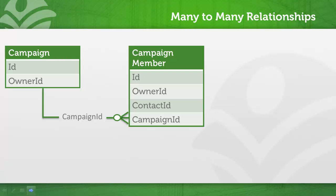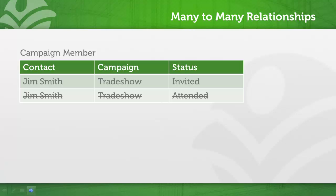In Salesforce, many-to-many relationships are established by using a join object. In this example, we will look at a campaign's relationship to leads and contacts. A campaign can have zero to many campaign members, and a contact or lead can belong to each campaign only once.